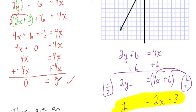If, however, you get rid of all the variables and the equation is false, then you know that it is an inconsistent system and there are no solutions. The lines will be parallel.